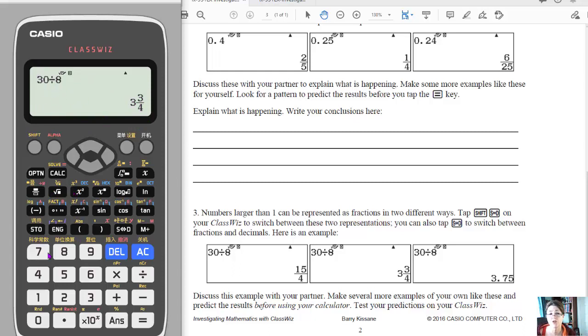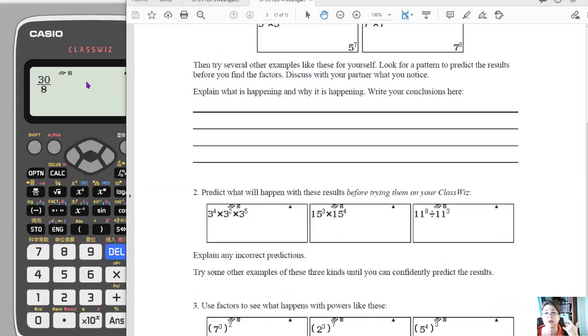I could have also done the 30 divided by 8 as a fraction to begin with. I could have done 30, hit the fraction button, and did 38ths and got the same result. So lots of ways that you can really explore number sense with students and have them look for the patterns very quickly because we have this standard notation in the scientific calculator.